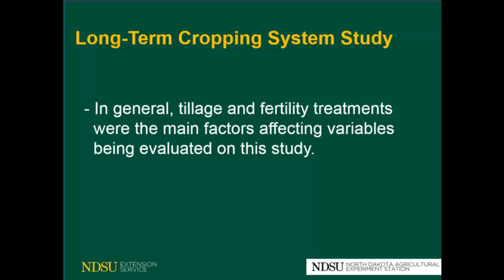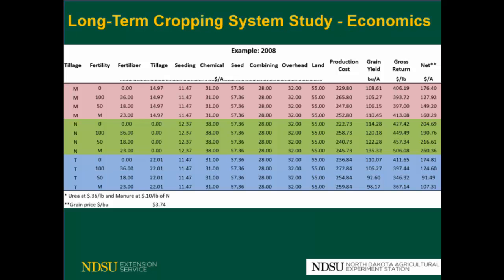What we have seen throughout the years in this study is that tillage and fertility treatments are the main factors affecting yield and all the other measurements taken in this study. Last year we started looking at some of the economics of this system. We are looking at the economics of each fertility treatment inside the different tillage systems — all the tillage systems and the fertility treatments.